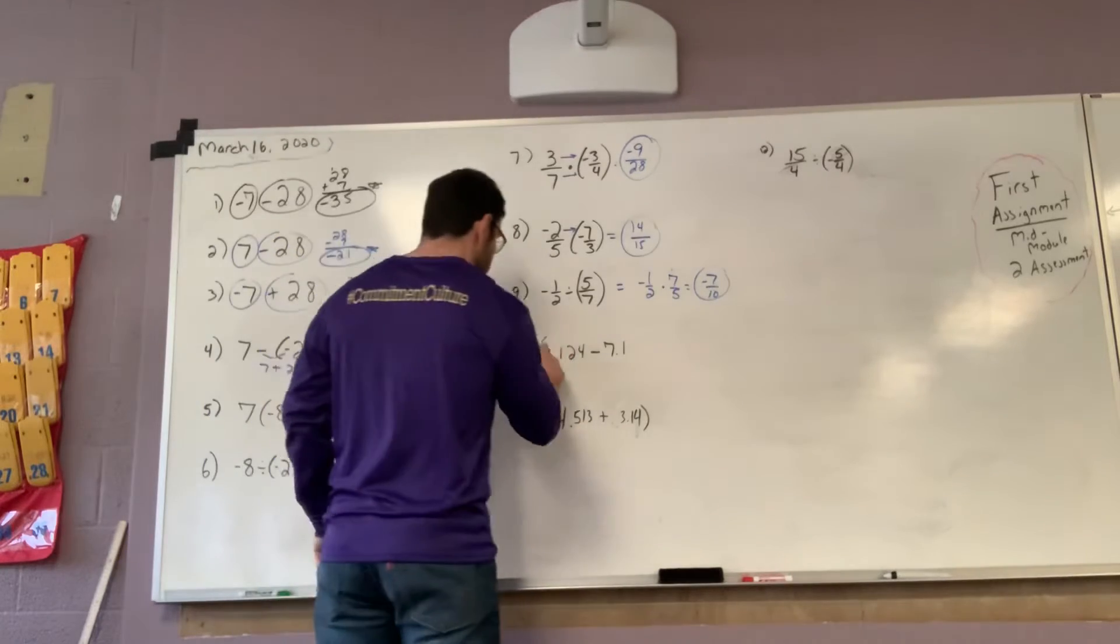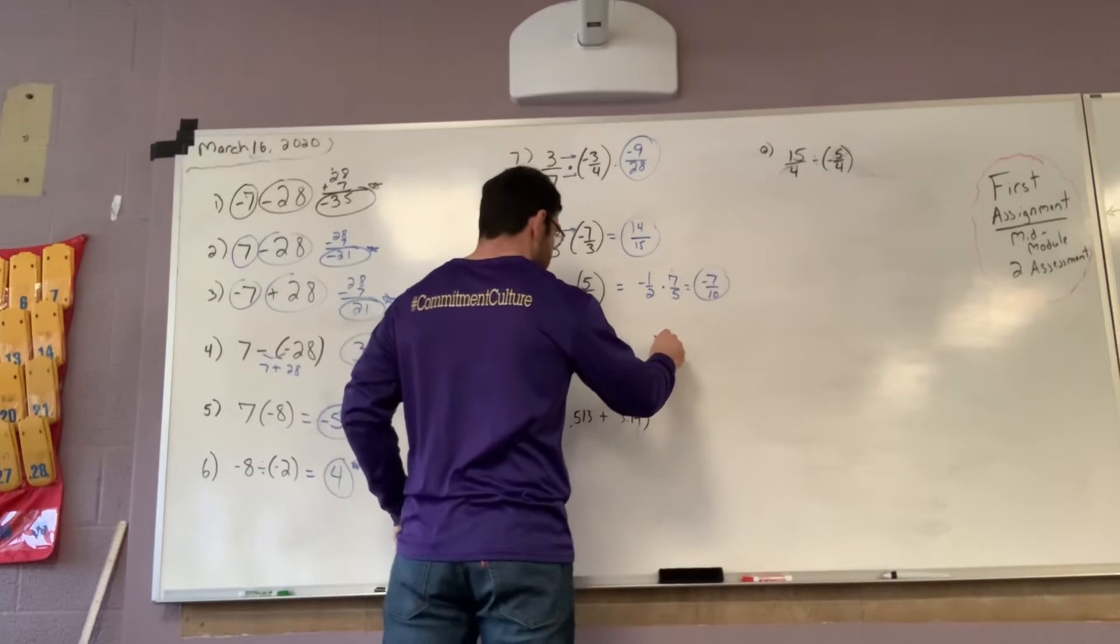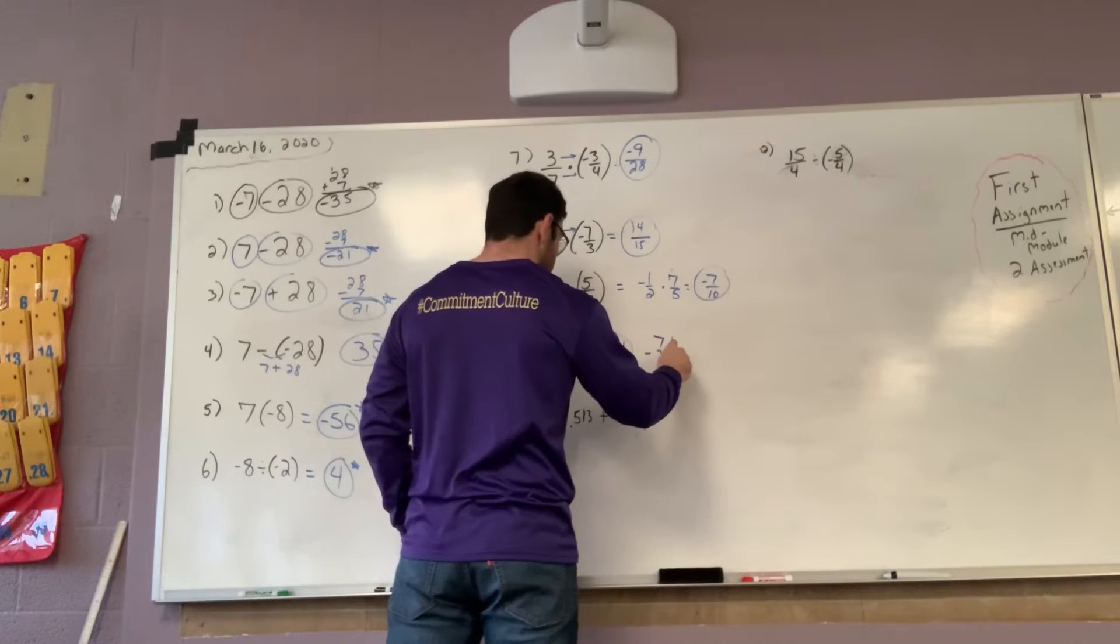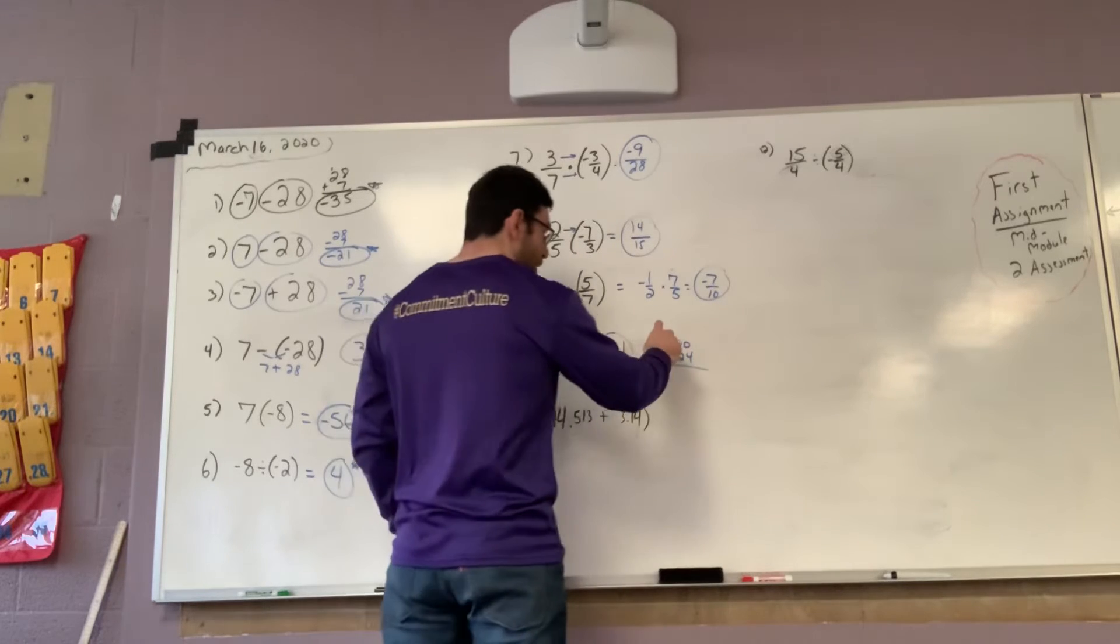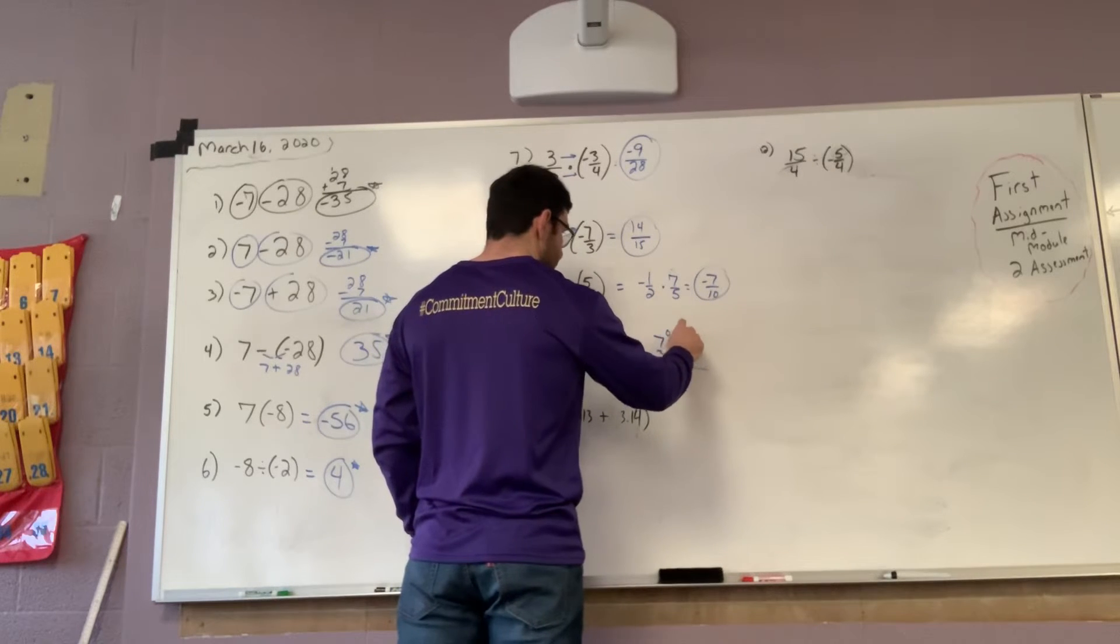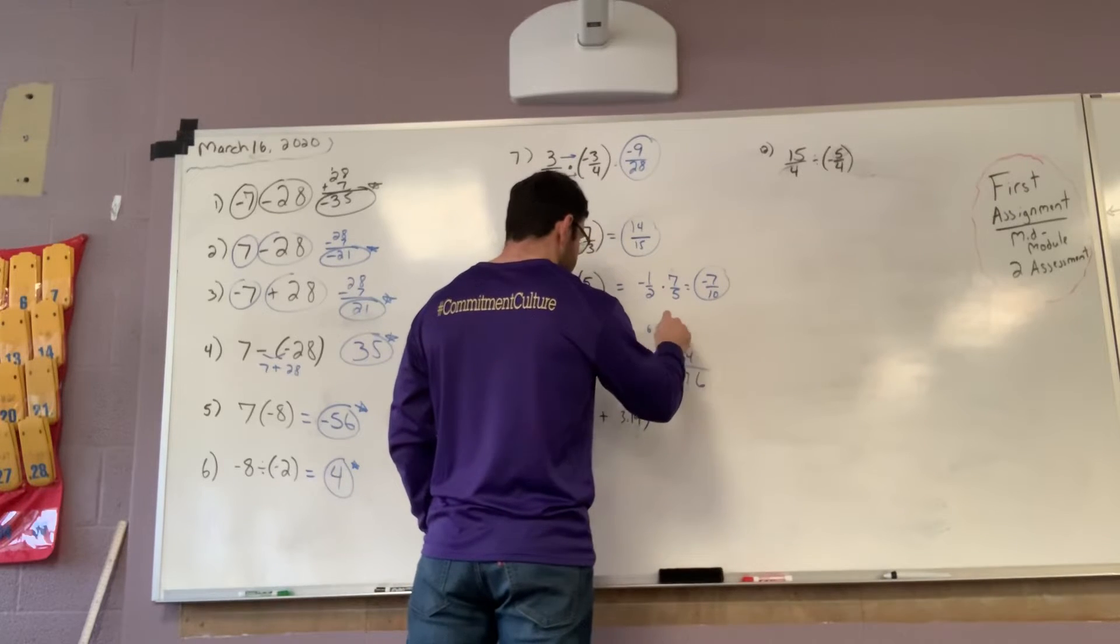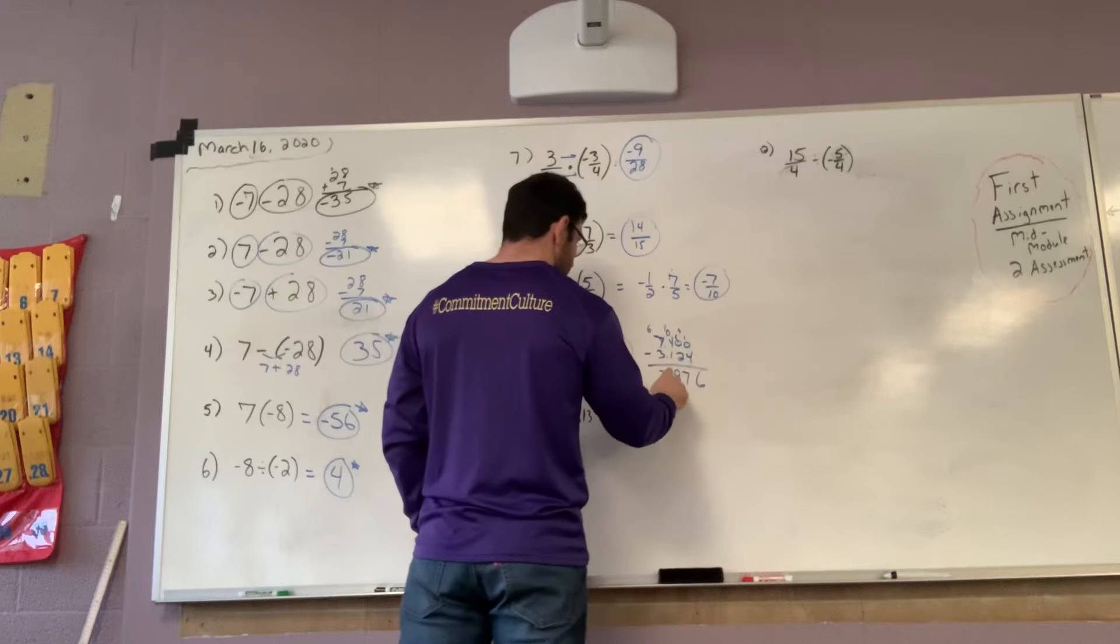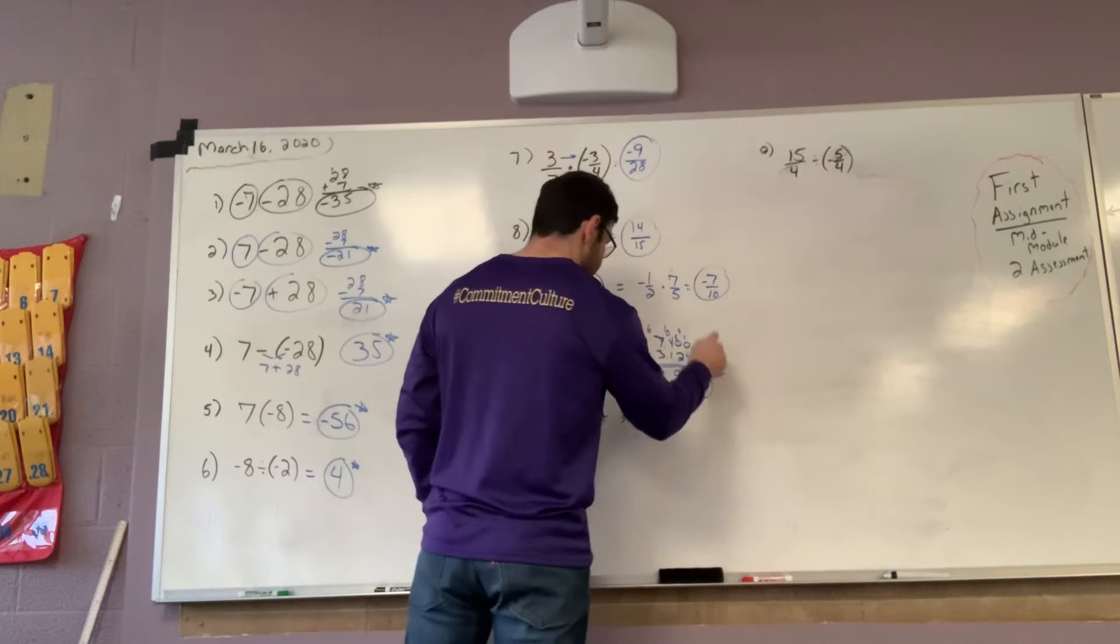Okay, circle. Circle. Different signs, subtract. 7 and 1 tenths minus 3. Line up your decimals. Keep the places the same. Regroup is 0, 10. Regroup 9, 10. 6, 7. Regroup 10, 9. Decimal. 3. Larger number was negative, so it stays negative.